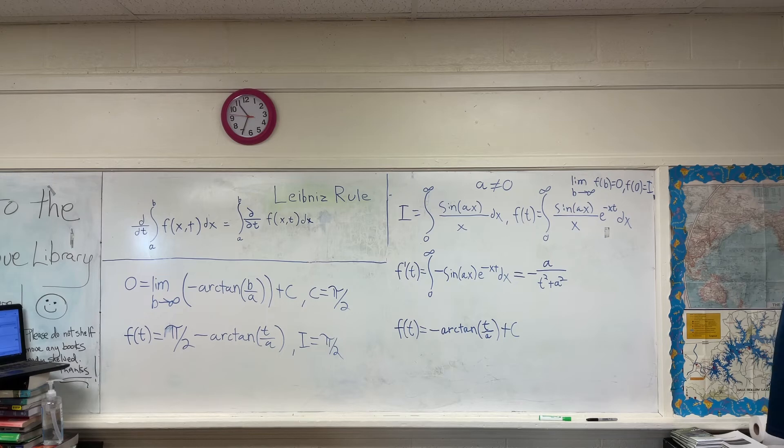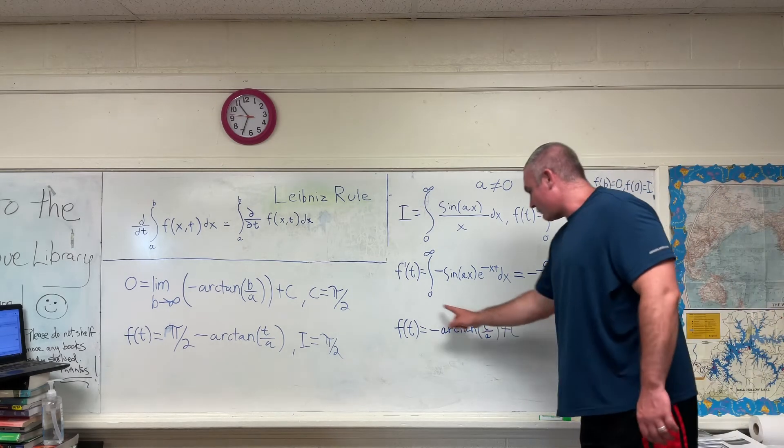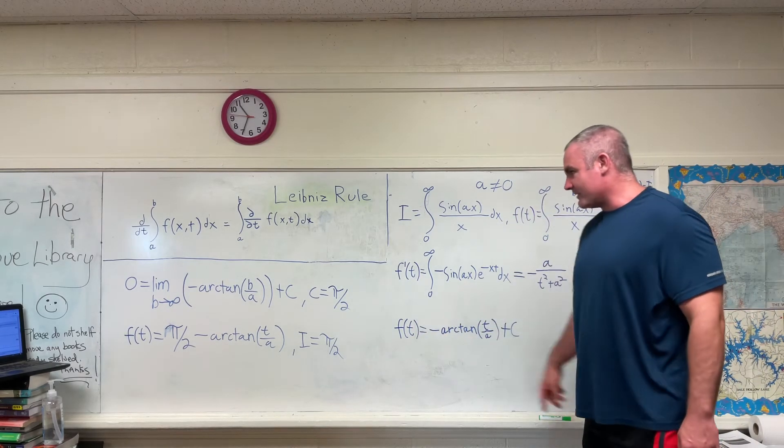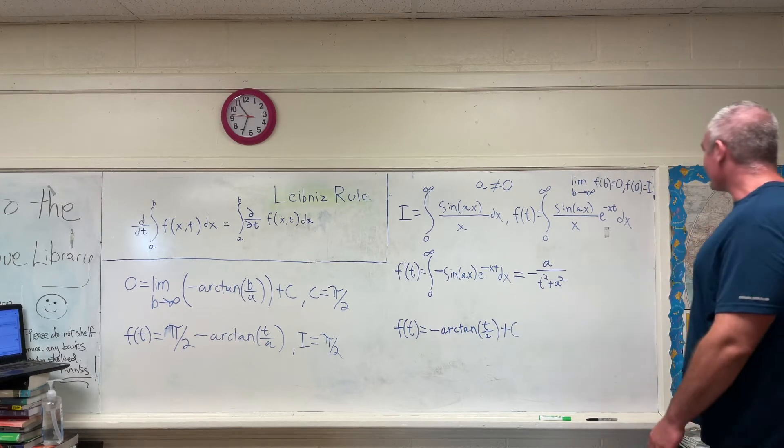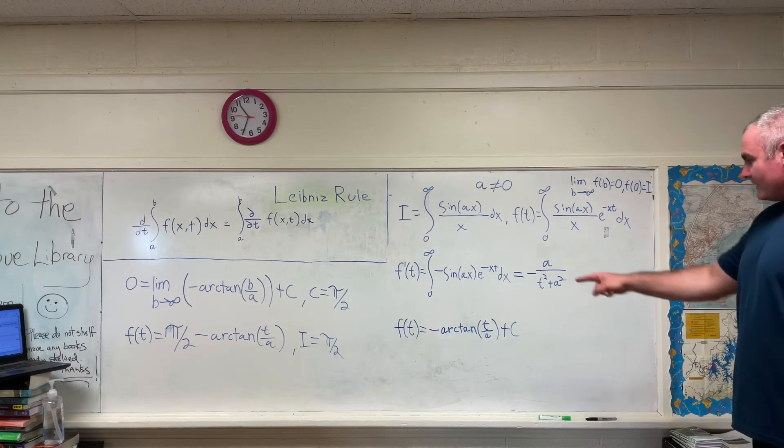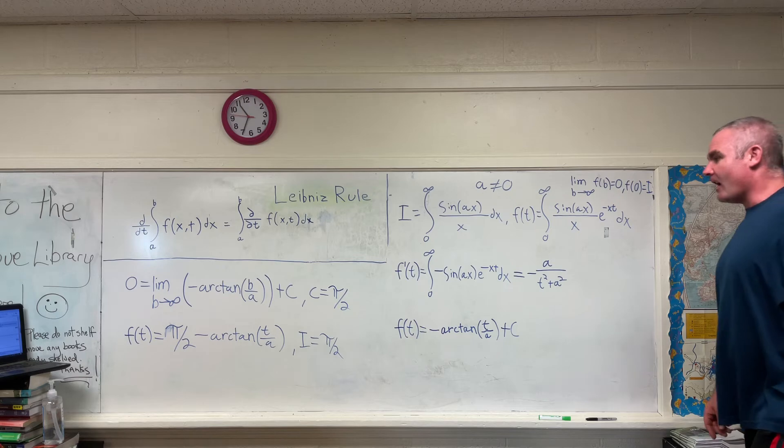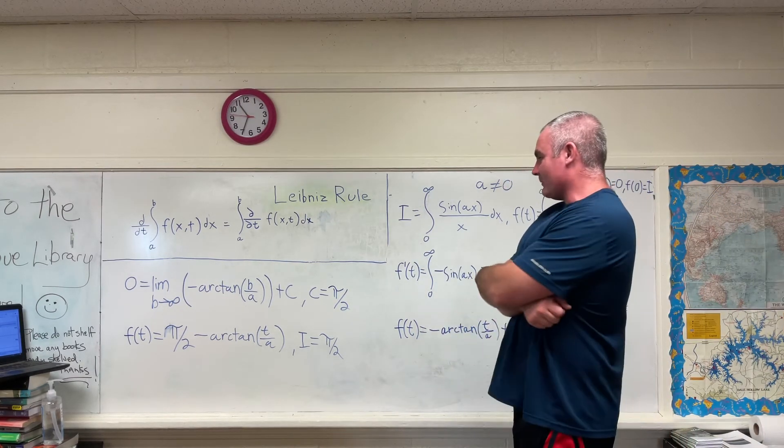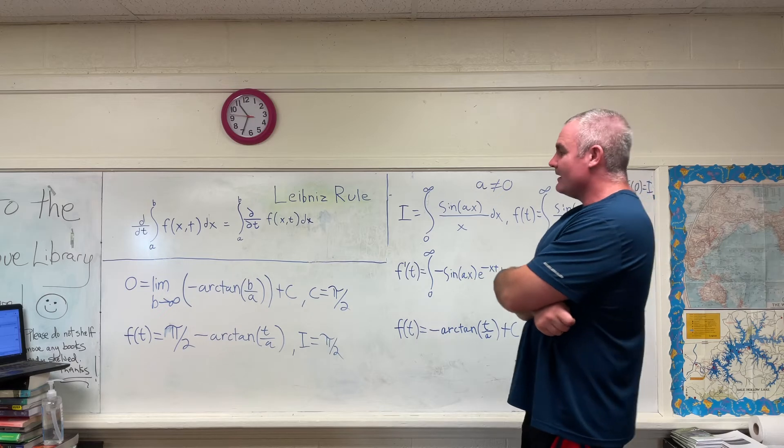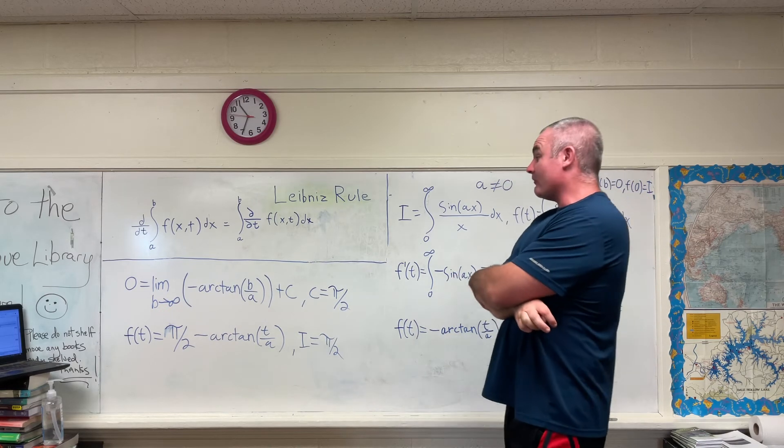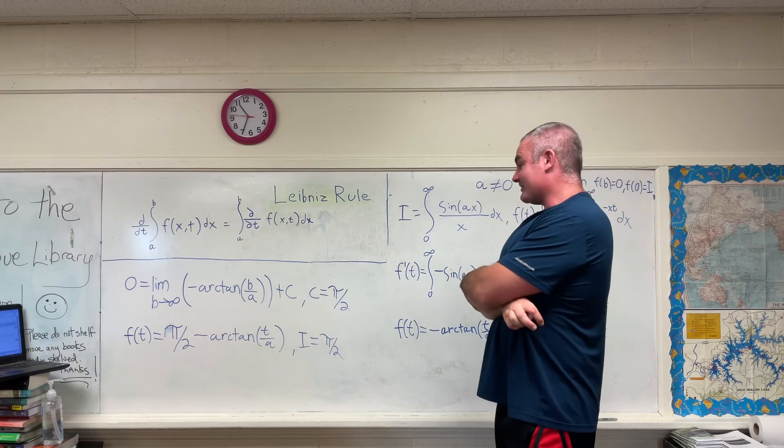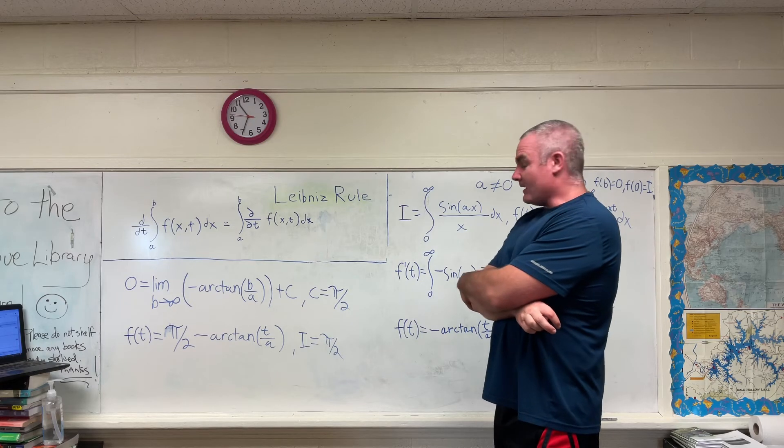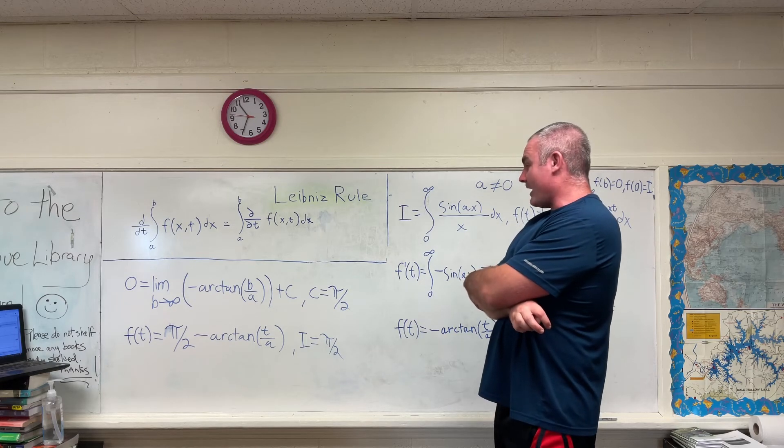So where were we? I believe we were on this step right here, moving on to the next one. So we're going to use our initial values right there and plug them into our function of t. That's going to give us that zero is equal to the limit as some value b approaches infinity of the negative arc tangent of ab over a plus c. And that'll give us a value for our constant of pi over two.